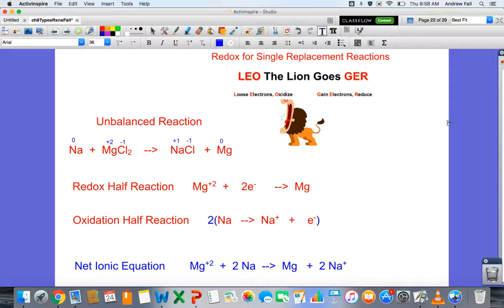In the redox half reaction, magnesium needed to gain two electrons, while in the oxidation half reaction, sodium only had to lose one. We have to balance this so that the number of electrons gained by magnesium equals the number of electrons lost by sodium.